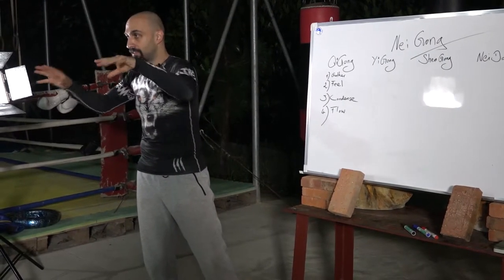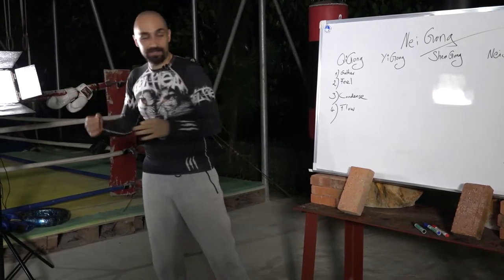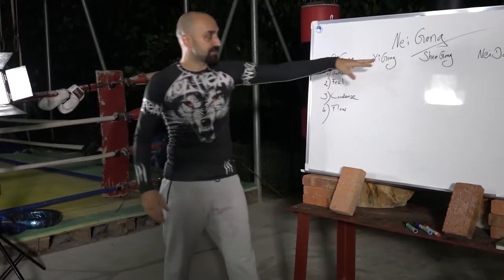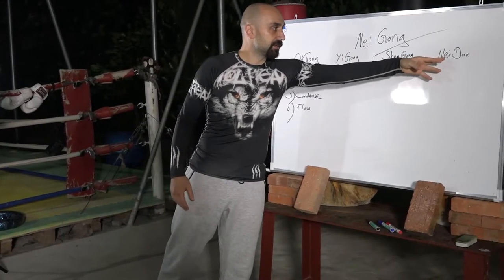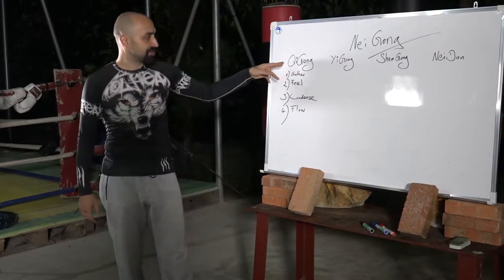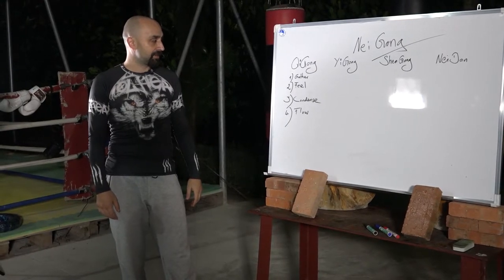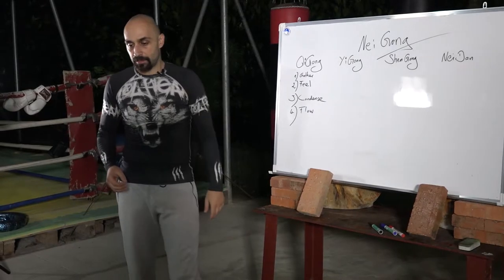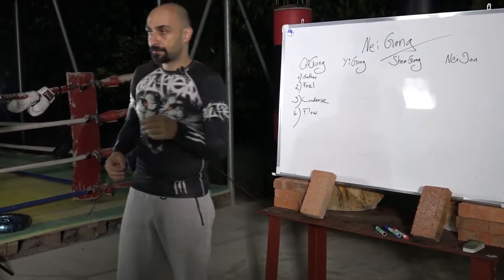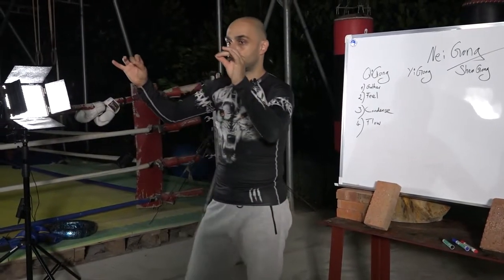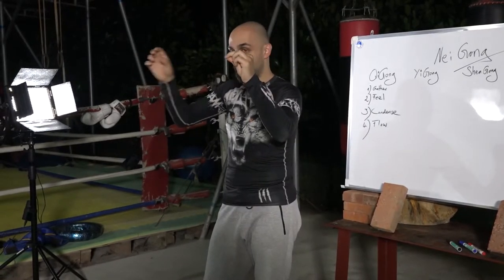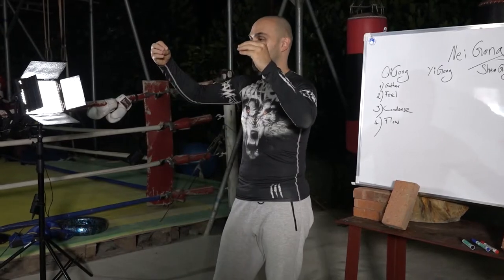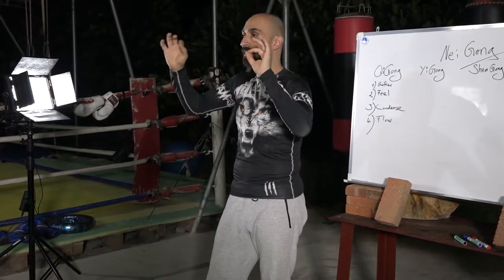To understand gathering qi, you must understand what qi is. Like Yi means mind, Shen means spirit, Neidan means inner elixir — but what is Qi? Qi basically you can translate as a flow between two points. Point A, point B, and the flow in between we can call qi.